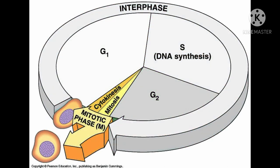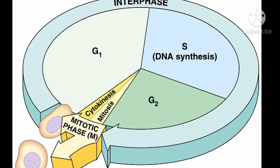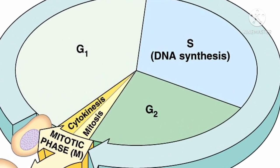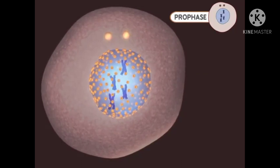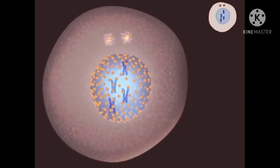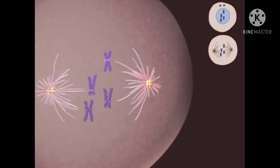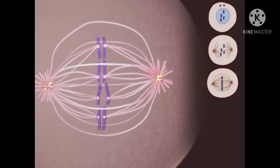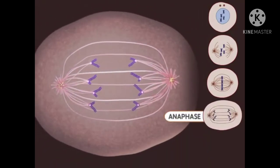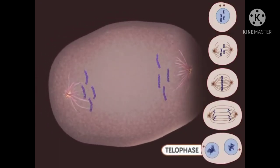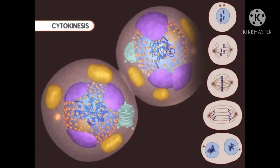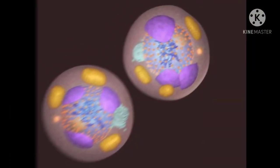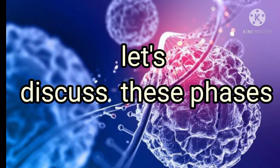The mitotic phase can be divided into two main parts: mitosis and cytokinesis. There are five phases in mitosis: Prophase, Prometaphase, Metaphase, Anaphase, and Telophase, followed by Cytokinesis. Let's discuss these phases one by one.